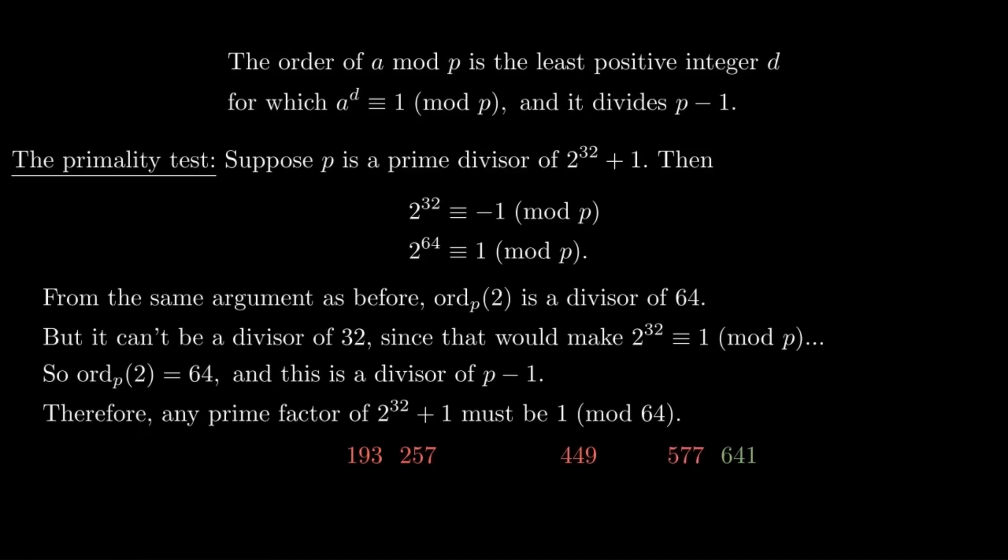And now, if Euler did a bit of extra work, which he may or may not have done, he could have divided 641 out of this big number and gotten that 6 million, roughly, number. And then, again, the prime divisors of that number are all 1 mod 64. So he could keep testing primes up to the square root of that, which would only be a few thousand.